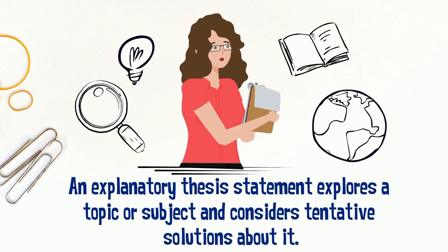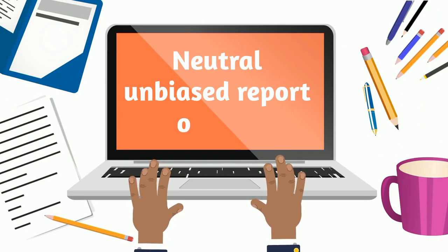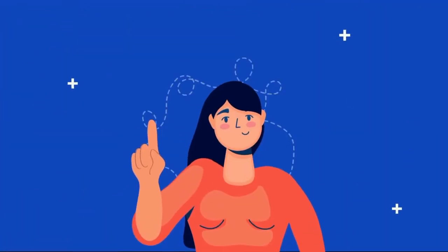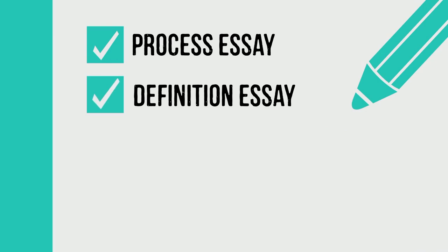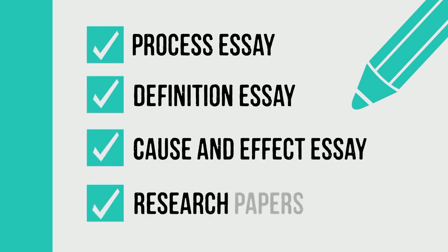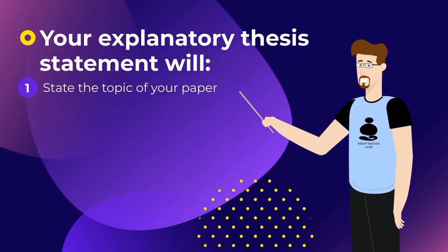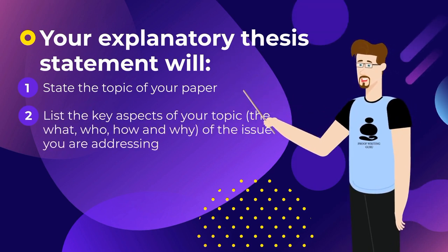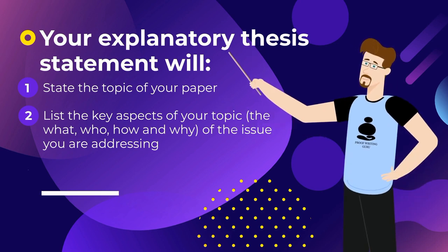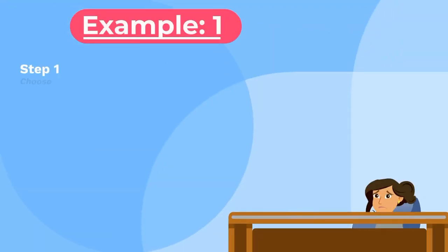B: Explanatory, expository, or informational thesis statement. An explanatory thesis statement explores a topic or subject and considers tentative solutions about it. This thesis presents a neutral, unbiased report or view — it is not a debate. It never declares a position that needs to be argued or defended. An explanatory thesis is seen in expository essays like the process essay, the definition essay, the cause and effect essay, and in research papers. Your explanatory thesis statement will: one, state the topic of your paper; two, list the key aspects of your topic — the what, who, how, and why of the issue you are addressing; three, explore possible solutions.